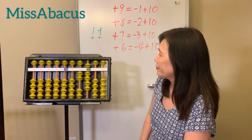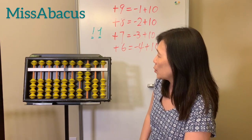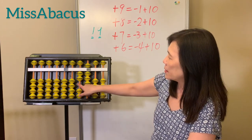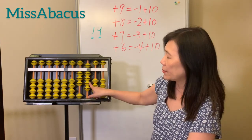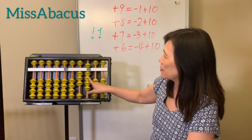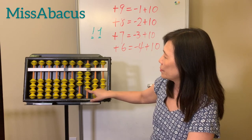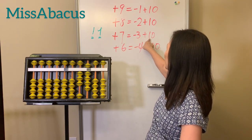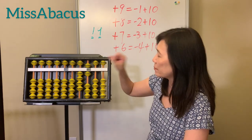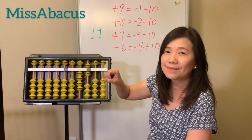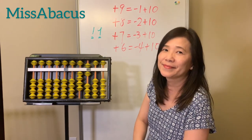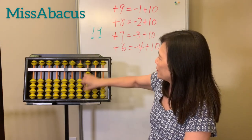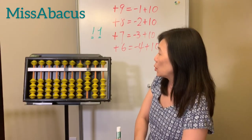Let's do 29 plus 17. Same thing: 17 is ten here and seven here. You don't have any bits left, so use the seven rule — take away three, plus ten. That's the answer.